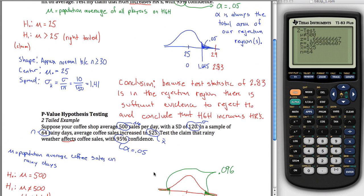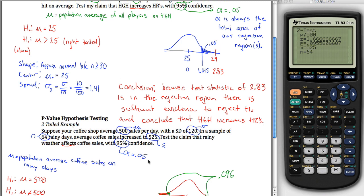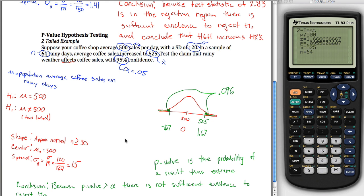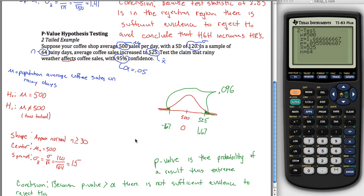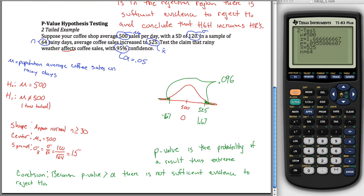But what you might want to do is go back and redo both of these examples but do this one using the p-value method and do this one using the classical method and make sure you get the same conclusions. And if you get the same conclusions, then that's good. You're starting to understand these methods. I think that's enough on this. That's the end of this video.